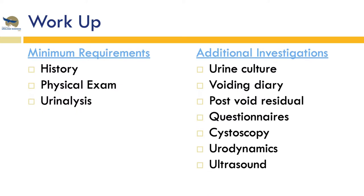In terms of the workup for OAB, the guidelines have three minimal investigations that every patient should have: a good history, a physical exam, and at minimum a urinalysis. Depending on the physical exam and history, additional investigations include a urine culture, voiding diary, post-void residual, and questionnaires such as the OAB symptom score. The guidelines don't recommend cystoscopy, urodynamics, or kidney bladder ultrasound routinely, but in some complicated patients this may be warranted.